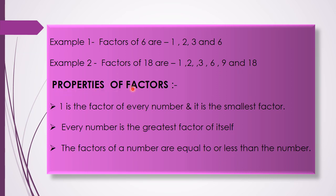Let us learn the properties of factors with the help of these examples. The first property is: 1 is the factor of every number and it is the smallest factor. From both examples you can see that 1 is a factor and it is the smallest. The second property is: every number is the greatest factor of itself. In the factors of 6, the number 6 itself is a factor and it is the greatest. Similarly, in the factors of 18, 18 itself is the greatest factor.